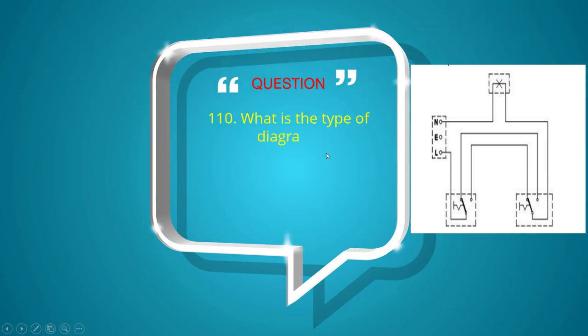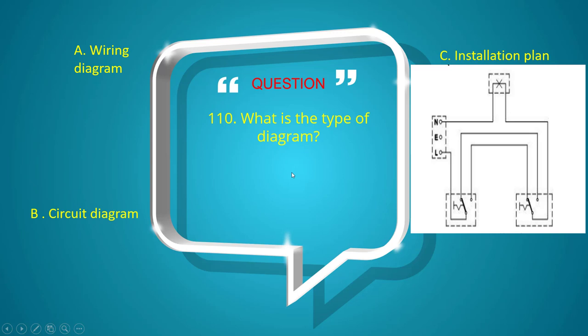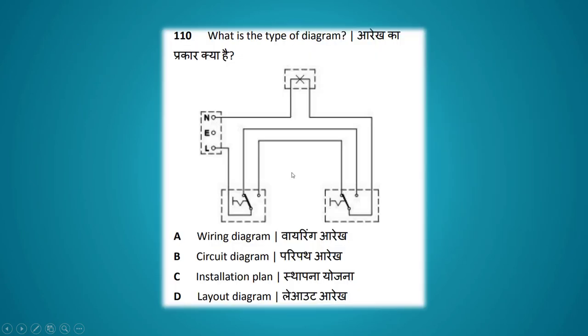What is the type of diagram shown? Options: wiring diagram, circuit diagram, installation plan, layout diagram. The answer is wiring diagram.